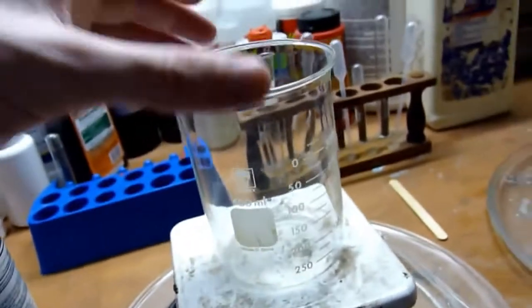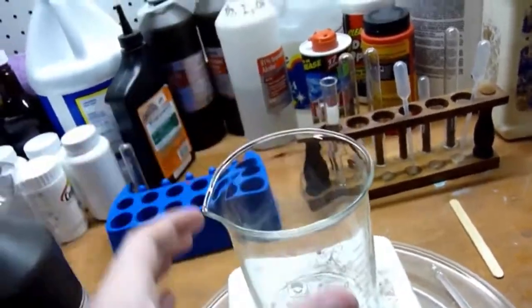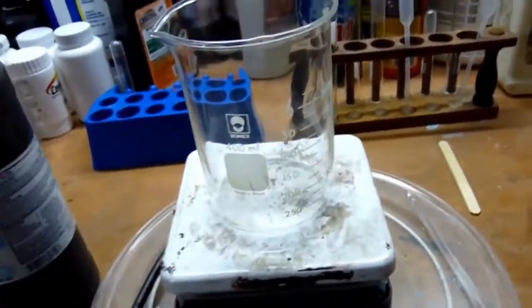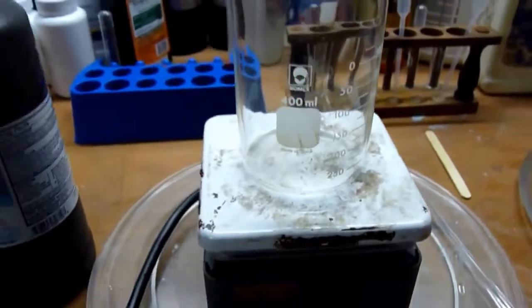You also want it to be as wide-mouthed as possible, because the more surface area you have of the liquid, the more evaporation you're going to get. So this is my widest beaker, and my hot plate's not much bigger, so that kind of works out.